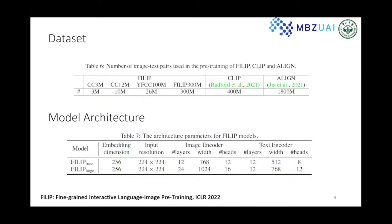We also collected a very large dataset from the internet called FILIP-300M, and besides that, we used three other public datasets: CC3M, CC12M, and YFCC. Finally, we use 340 million image-text pairs for pre-training — slightly smaller than the dataset used by CLIP, but much smaller than the dataset used by ALIGN from Google.